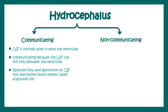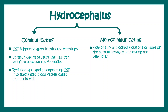In non-communicating hydrocephalus, the CSF is blocked along the path of the ventricles, so CSF cannot move from one particular ventricle to another. One ventricle gets bigger, and this leads to an obstructive form of hydrocephalus.